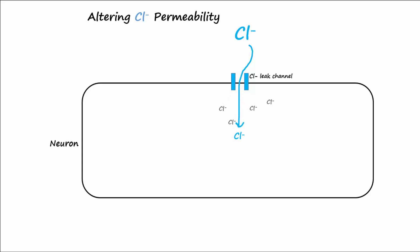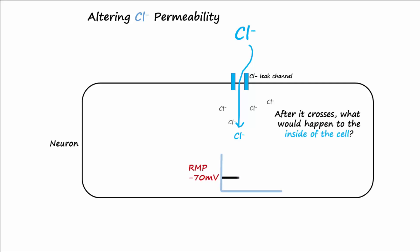Chloride is negative, so after it crosses and comes into the cell, the inside of the cell, or RMP, would become more negative — or you could say it becomes hyperpolarized.